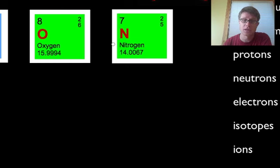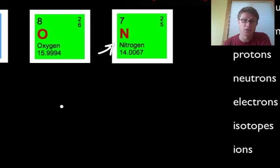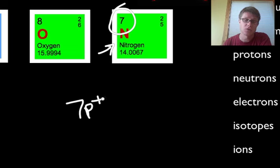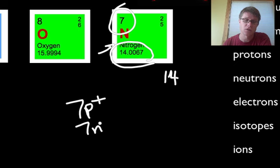Let's do something like nitrogen. Nitrogen makes up most of what you're breathing right now. So if you look at it, our atomic number is 7, so how many protons does it have? 7 protons. How many neutrons does it have? Well let's round for a second — this is the average. Let's say that it's 14. So if the mass number is 14, that means we have 7 neutrons.